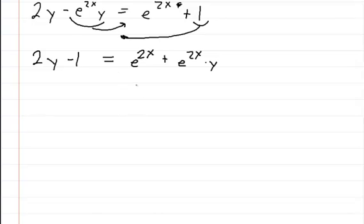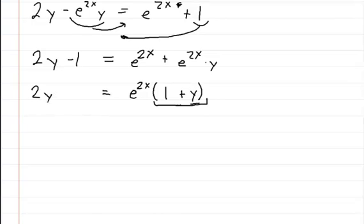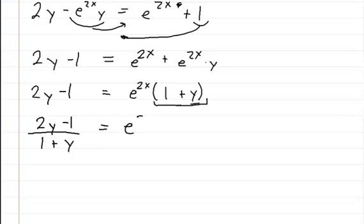Now I'm going to work on the right side. Here I want to take this e to the 2x out. Since they're both the same I can just do this — I can say e to the 2x times 1 plus y. I'm just taking it out so I can move this part over to the left side. So that's equal to 2y minus 1. Now I'm going to divide by 1 plus y, so you're going to get 2y minus 1 divided by 1 plus y, and that's equal to e to the 2x.